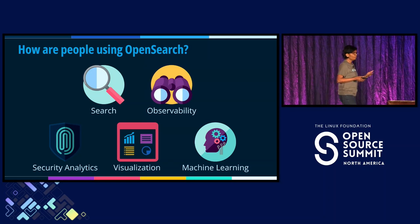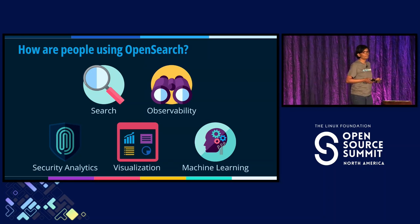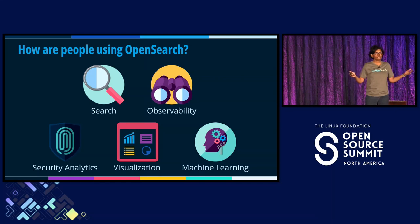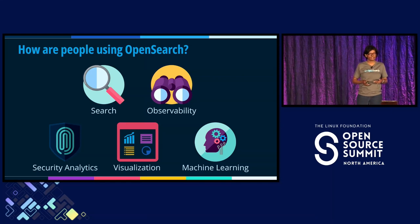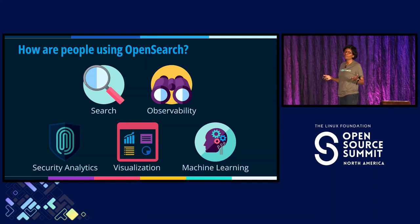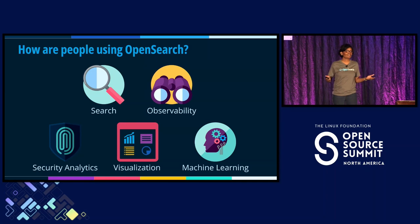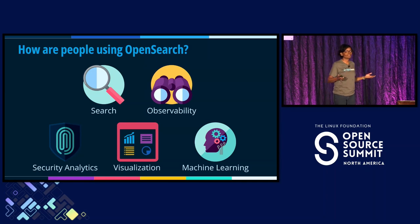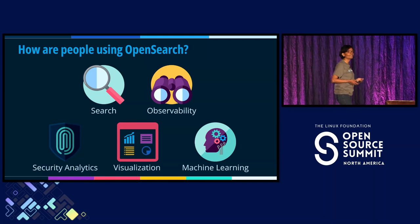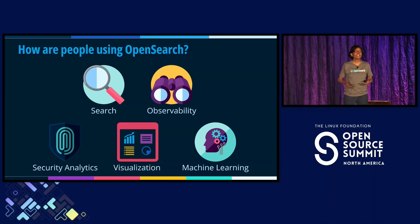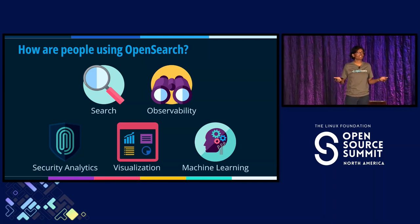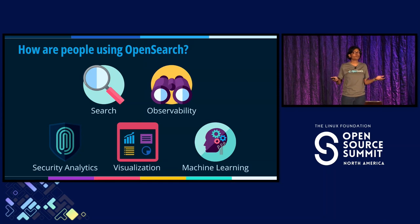We have a visualization system which powers all of these scenarios, and we also have machine learning and generative AI capabilities. OpenSearch is a popular vector database.